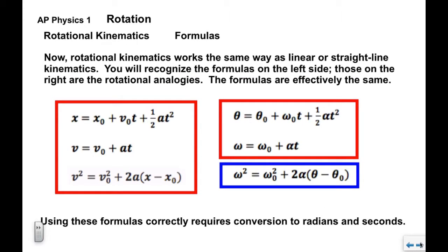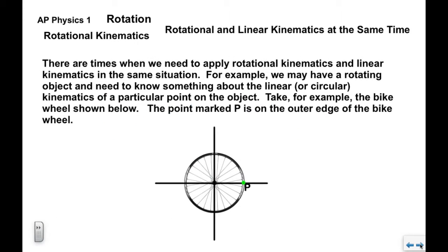Using these formulas correctly requires conversion to radians and seconds. If you have degrees or RPMs, you need to change them to radians per second to use the formulas properly. There are also situations where we need to apply both rotational and linear kinematics — for example, if we have a rotating object and want to know something about the linear kinematics of a particular point on the object.